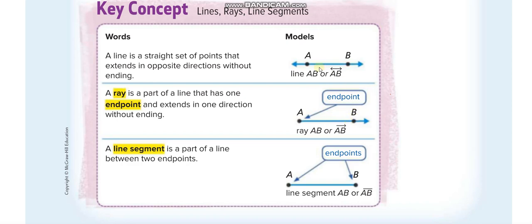Whenever you see two arrows it is a line, and you represent it as Line AB or AB with a small double-arrow line above it. Whenever you see just a single arrow — a line extending on one side only — you will say it is a ray, and you represent it as Ray AB or AB with a single-arrow ray above it.